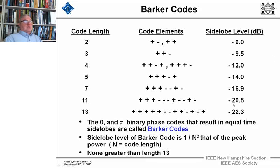You can see them with their side lobe levels. We change the phase zero or pi, which results in equal-time side lobes called Barker codes. The side lobe level is 1 over N squared that of the peak, where N is the code length. And none exist greater than 13.